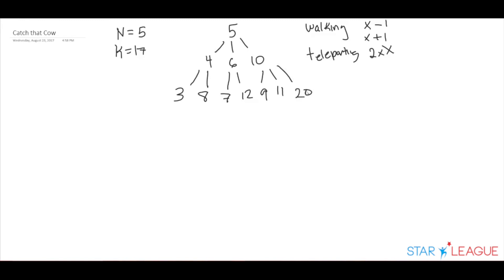At this point, we are done with the current layer of possible moves and will move on to the next layer. Note that each layer starting from 0 for the first layer represents how many moves or minutes it takes to get to that location. So for example, node 5 is our starting location at 0 minutes, and the second row — 4, 6, and 10 — will be 1 minute, and so on.